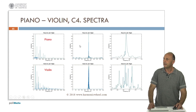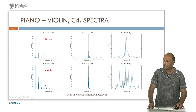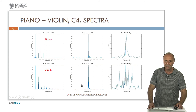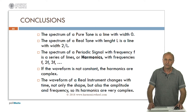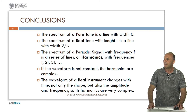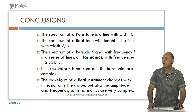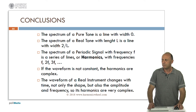Now these are the spectra for the piano. It contains several lines, but each of them is quite complex. And in the case of the violin, each line as we can see contains an oscillating frequency, and the shape of the line is really complex. As conclusions: the spectrum of a pure tone is a line with width 0. The spectrum of a real tone with length L is a line with width 2 divided by L. The spectrum of a periodic signal with frequency F is a series of lines or harmonics with frequencies F, 2F, 3F, etc. If the waveform is not constant, the harmonics are complex. The waveform of a real instrument changes with time — not only the shape but also the amplitude and frequency — so its harmonics are very complex.